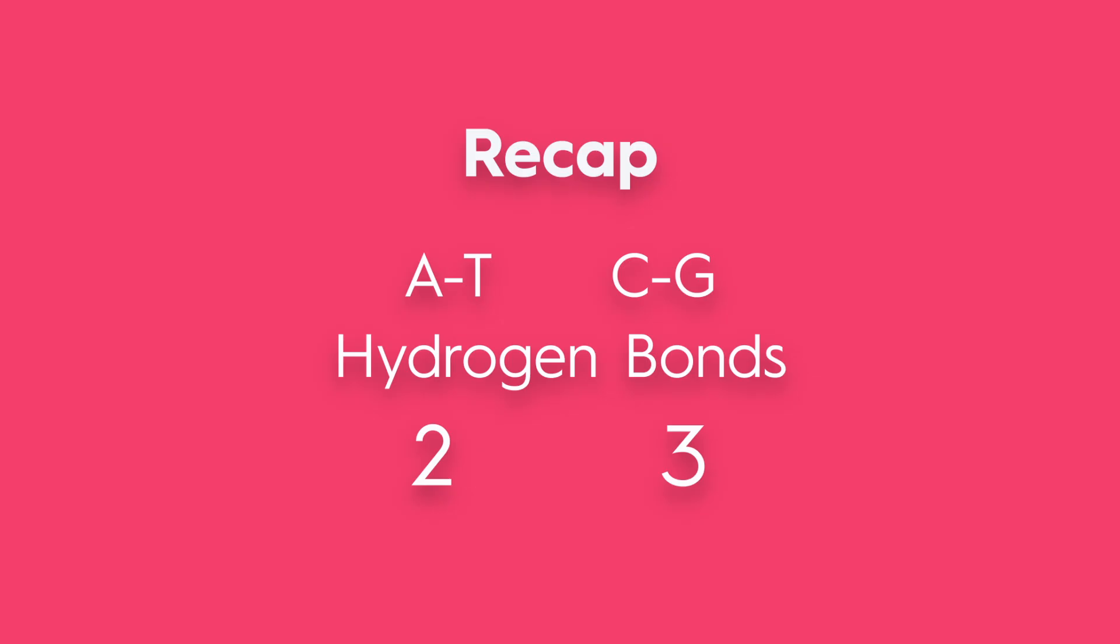To recap, A pairs with T, C with G. Purines meet pyrimidines. Two versus three hydrogen bonds keep the genetic code consistent and replicable.